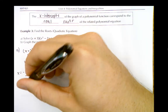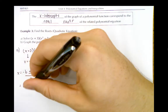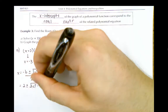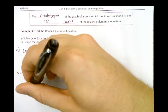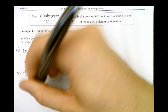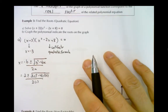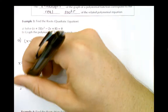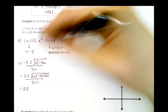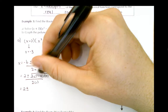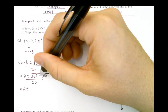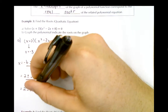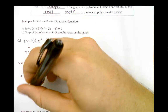So we get 2 plus or minus the square root of negative 2 squared minus 4 times 1 times 8, all over 2 times 1. Simplifying: negative 2 squared is 4, subtract 32 gives us negative 28, so we have 2 plus or minus the square root of negative 28, all over 2.